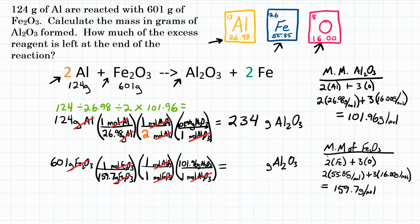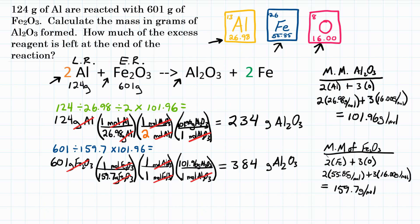The math: 601 divided by 159.7 — the second step is both 1's so we skip it — then multiplied by 101.96, equals approximately 384 grams. We've now solved both mass-to-mass stoichiometry problems. Comparing answers: 234 and 384. We go with the lesser value, so 234 grams of Al₂O₃ is what we will actually get. This means aluminum is the limiting reactant and Fe₂O₃ is in excess — there will be leftover Fe₂O₃.